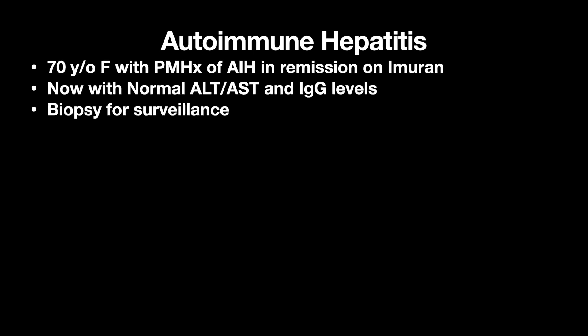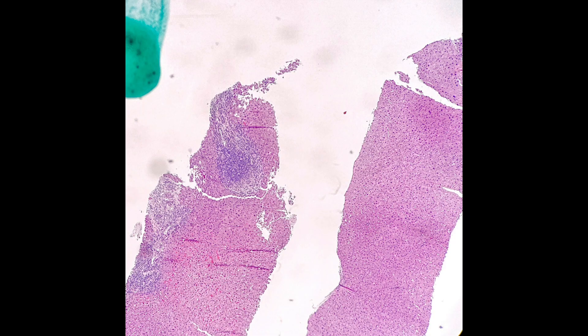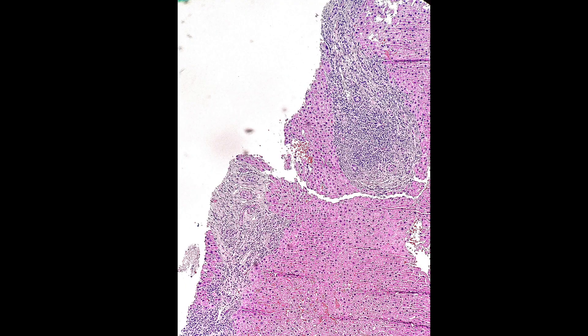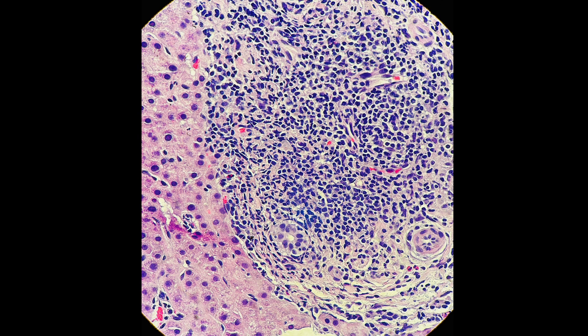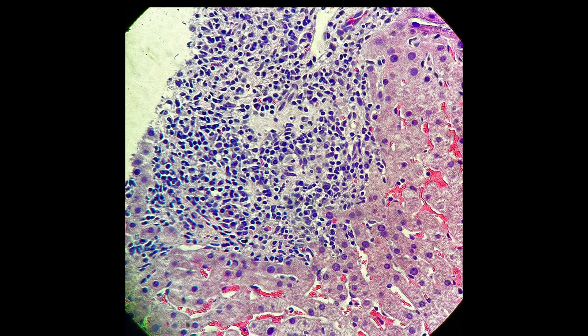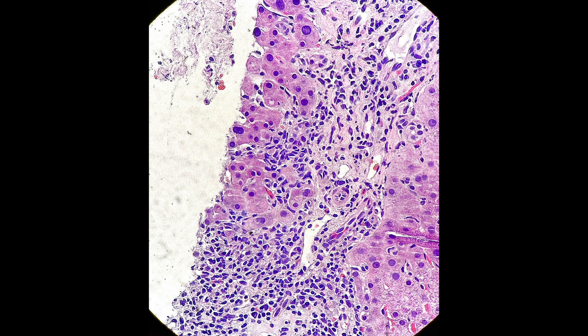This patient is 70 years old with a history of established autoimmune hepatitis in remission on Imuran, now with normal ALT, AST, and IgG levels, biopsied for surveillance. We can see inflammation in zone 1 portal tracks. Looking closer, we see plasma cells and lymphocytes — generally a lymphoplasmacytic inflammation. The bile ducts have some lymphocytes, but they're not the primary targets. A soft sign for AIH is that plasma cells tend to go to the edge of the portal track. Here is an instance where inflammation extends beyond the portal track into the hepatocytes — this is interface hepatitis.